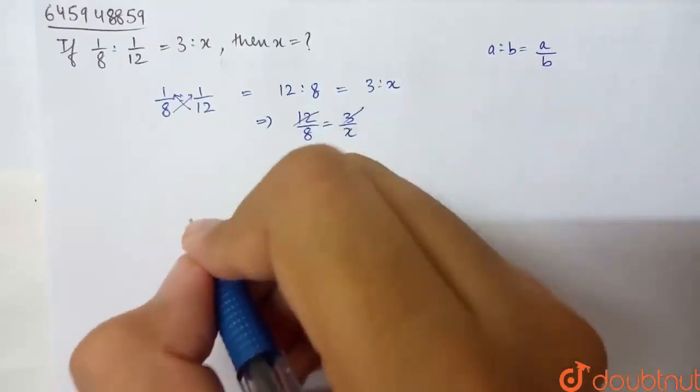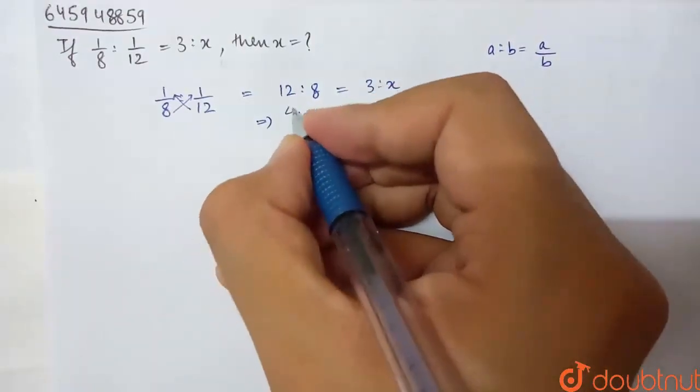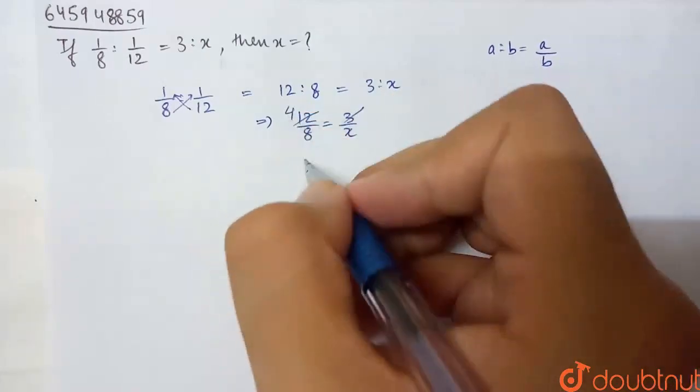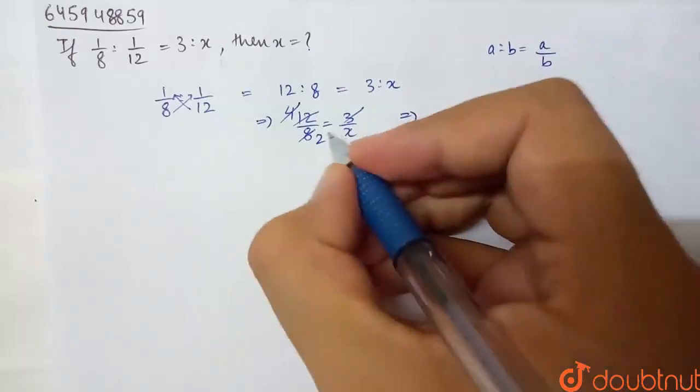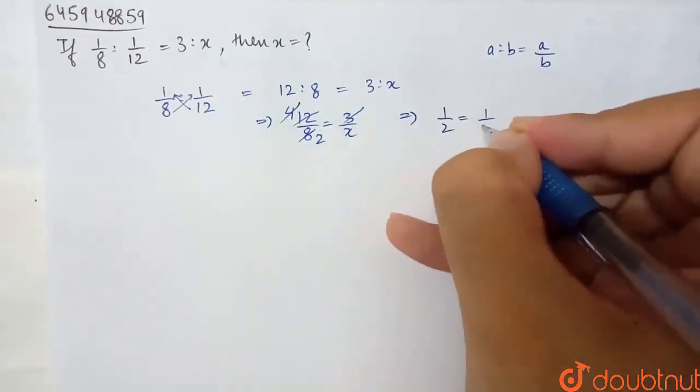So 3 and 12 cancel out. What do I have? Basically 4. 3 into 4 is 12. Similarly, 4 cancels from 8. So what do I have here? 1/2 is equal to 1/x.